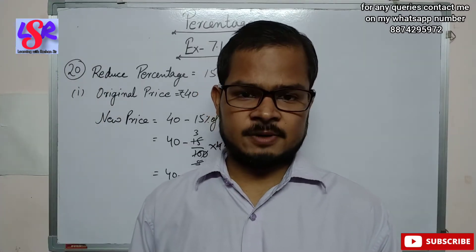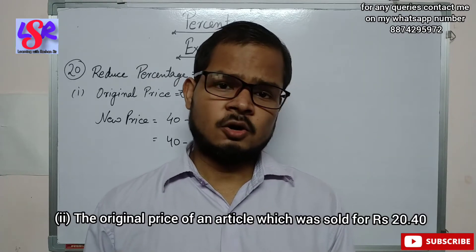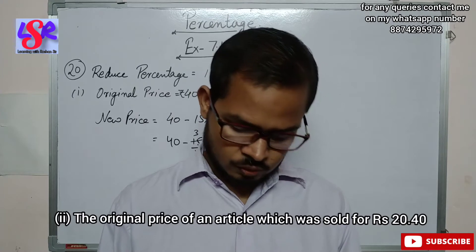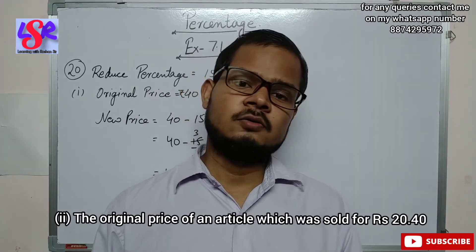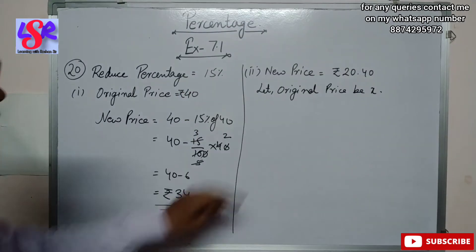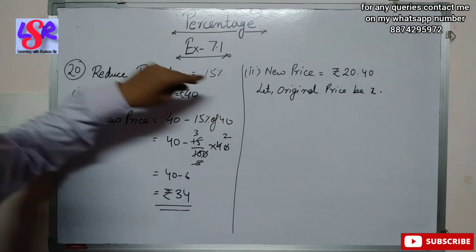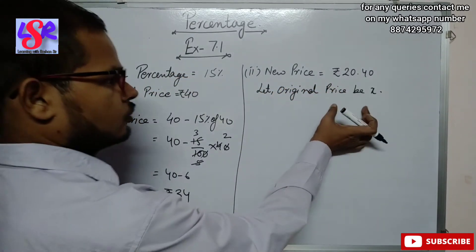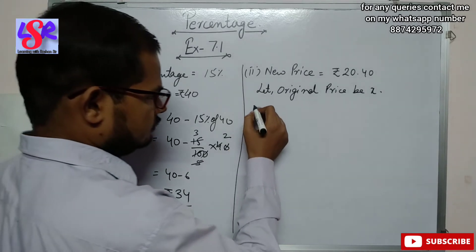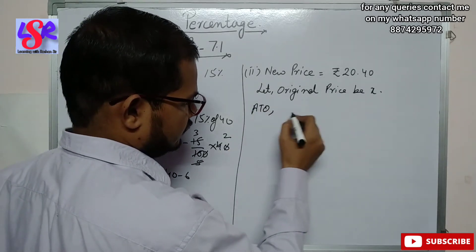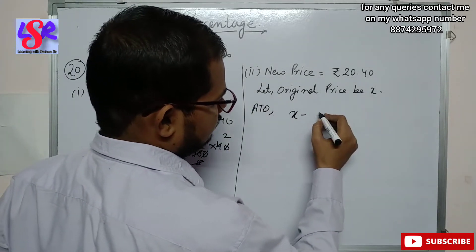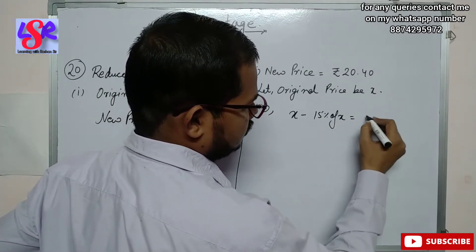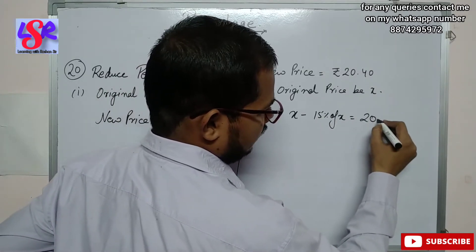Now we move to the second part of this question. Here the original price of an article is to be calculated, which was sold for rupees 20.40. Here also the reduced percentage is 15. The new price is 20.40. Let the original price be x. So according to the question, x minus 15% of x equals to 20.40.